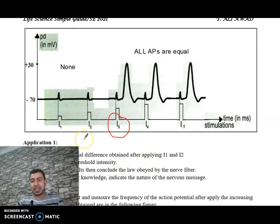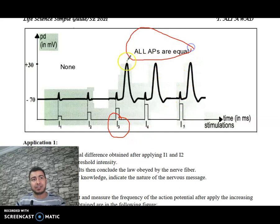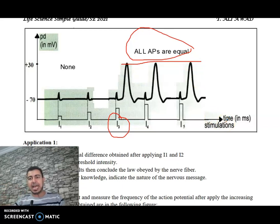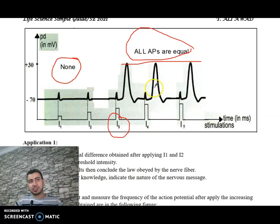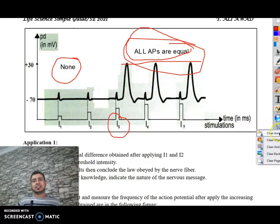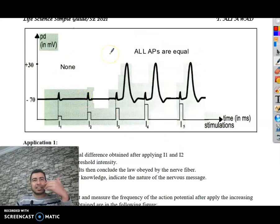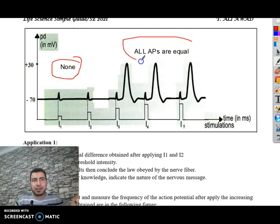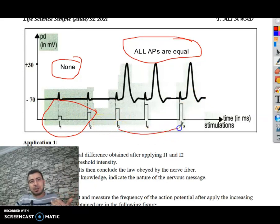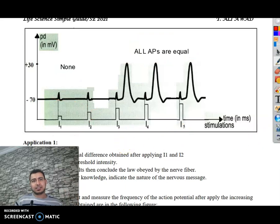I1 and I2 are ineffective — they don't create action potentials. However, I3 and above create action potentials, and all are equal at 100 millivolts. So we can conclude a law: either no action potentials are obtained, or action potentials are obtained and all are equal. This is called the law of all-or-none. When intensities are below threshold, there is nothing; when equal to or above threshold, action potentials are produced and all are equal.